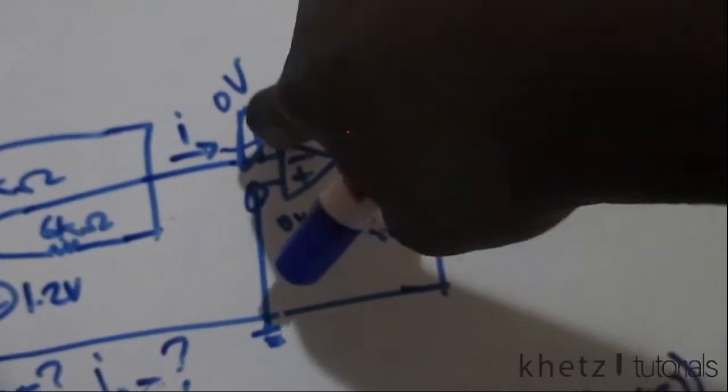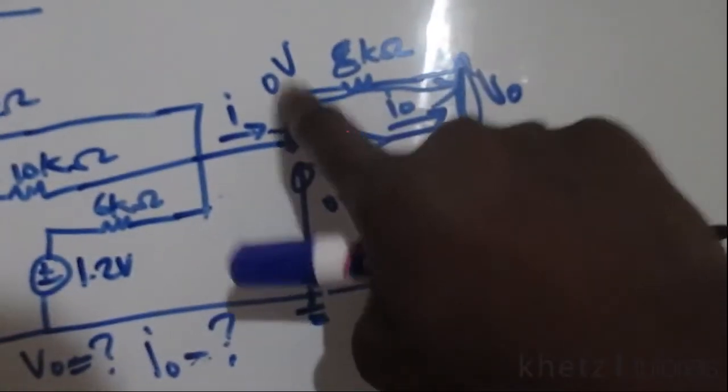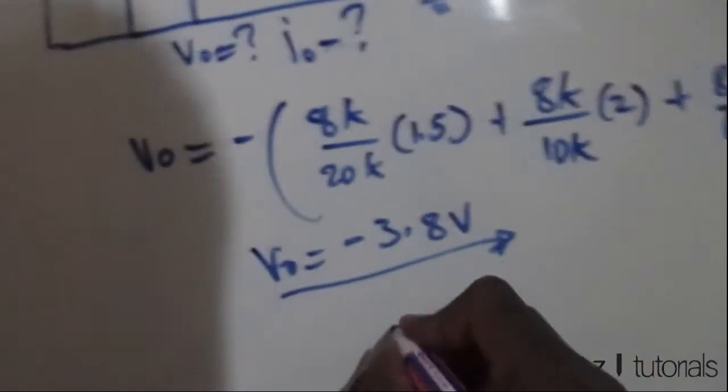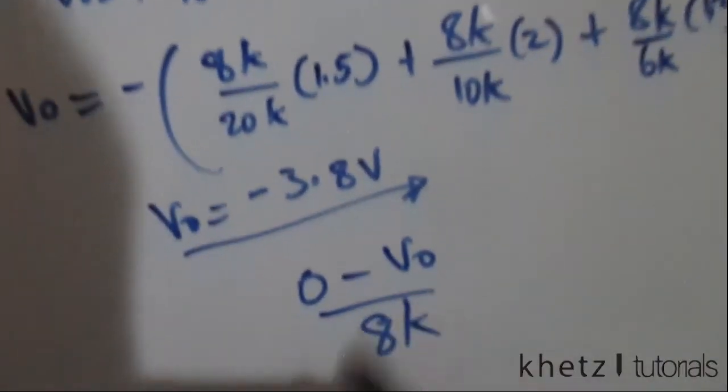And since this i goes all the way, you can say from this point to that point: zero subtracted vo divided by 8k, which is the resistor value which is along that path.